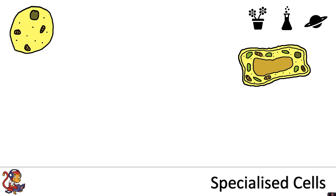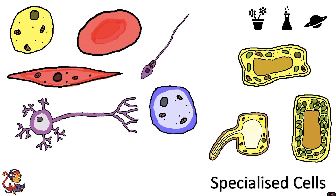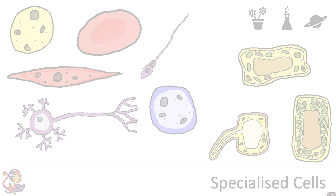So the next time you think of your typical animal and plant cell models, just remember that they actually come in lots of different shapes depending on the function that they do.